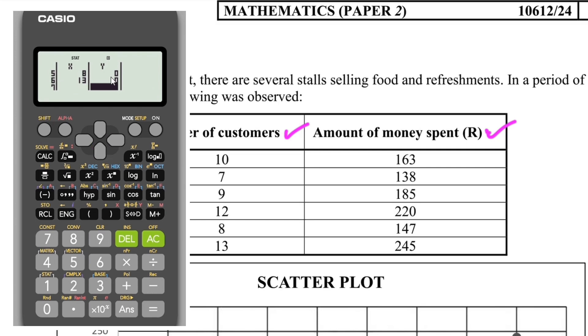Now I need to enter the corresponding y values. With 10, the corresponding y value is 163. Then with 7 it's 138. With 9 it's 185. Then we have 12 with a corresponding value of 220, and then after that we get 147, and lastly 245. So I've entered my data. What do I do next?